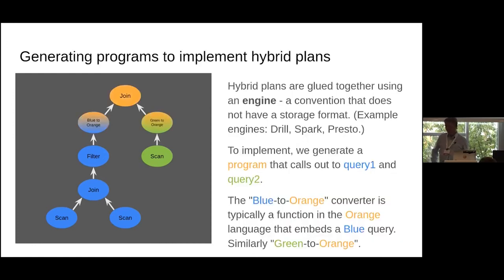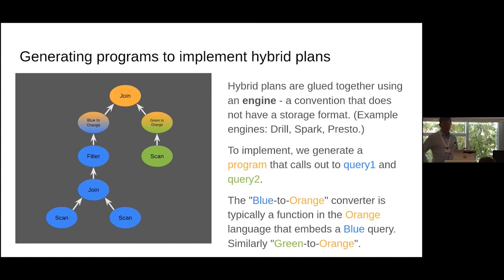Some conventions are for source systems — JDBC and Lucene are data sources. Other calling conventions are engines: systems that don't store data but are capable of computation. Spark, Presto, and Flink are examples of engines. ENUMERABLE is also an engine — it processes data in a single thread in Java. In hybrid plans combining data from multiple sources, often an engine convention is part of the plan where operations combine data from two or more conventions. Orange is an example of an engine convention. This is how we arrive at a hybrid plan.